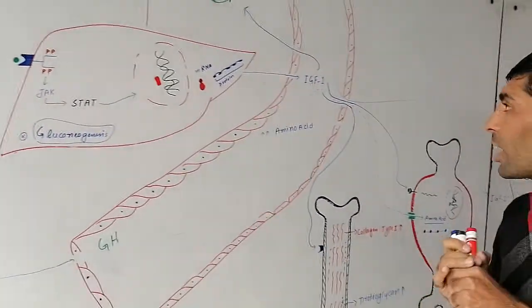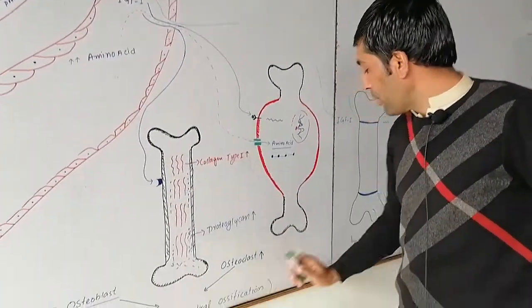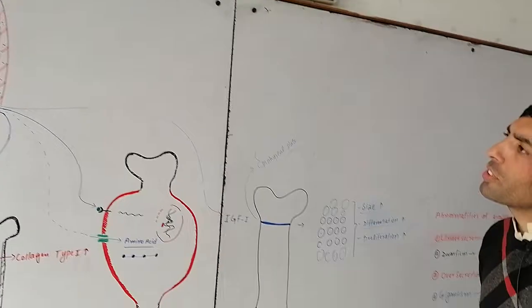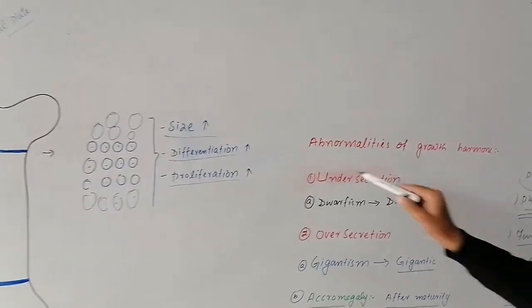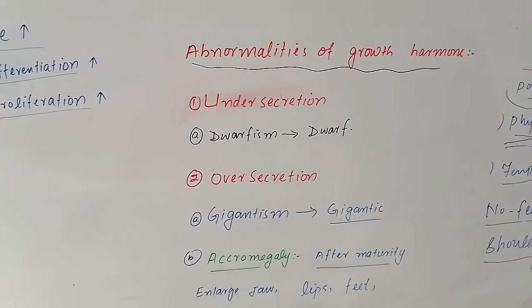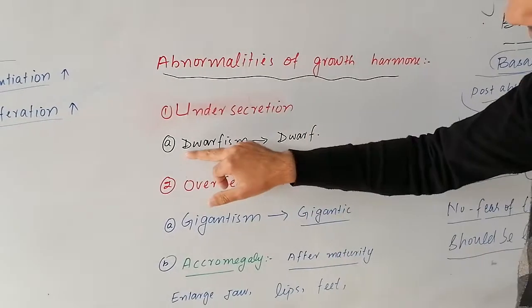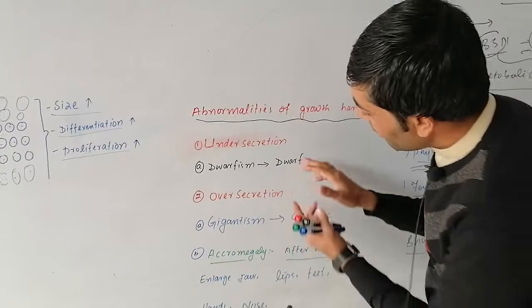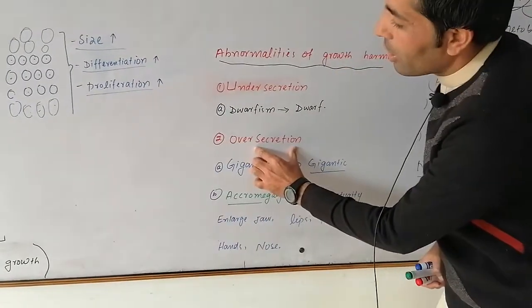Dear students, to summarize: muscle hypertrophy, endochondral ossification, and interstitial growth. This was the physiology and function of IGF type 1 and growth hormone. The abnormalities and pathology of growth hormone include undersecretion and oversecretion.